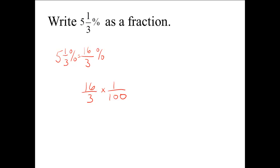Before we multiply, let's see if we can divide out any common factors. The numerator of the first fraction is 16, which has factors of 2, 4, and 8. Looking at the denominators, 100 is divisible by 4, so we divide 16 and 100 by 4. 16 divided by 4 is 4, and 100 divided by 4 is 25. There aren't any other common factors, so we multiply across: 4 times 1 is 4, and 3 times 25 is 75. So 4 over 75 is the fraction form of 5 and 1 third percent.